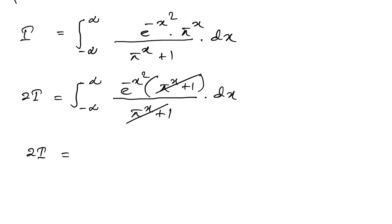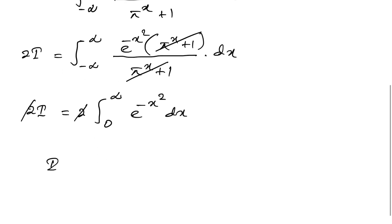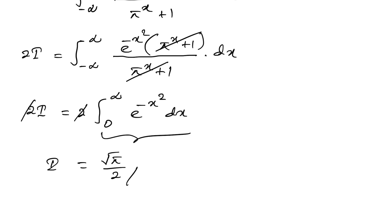So 2 times I equals, by symmetry, 2 times the integral from 0 to infinity of e to the minus x squared dx. The 2's cancel, and I equals the famous Gaussian integral: the square root of pi over 2. This is the answer. If you like this type of video, please subscribe to the channel. Thank you for watching.